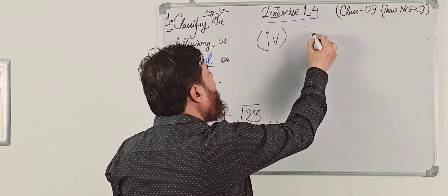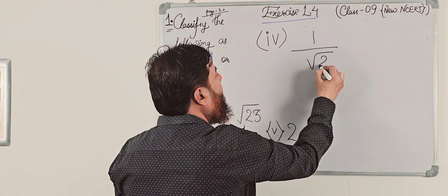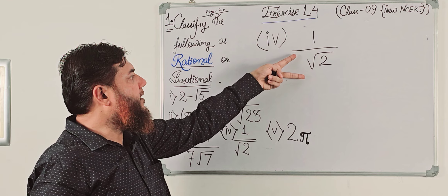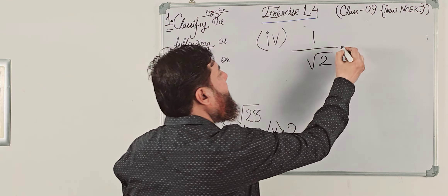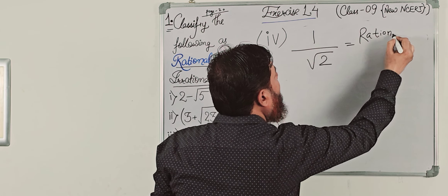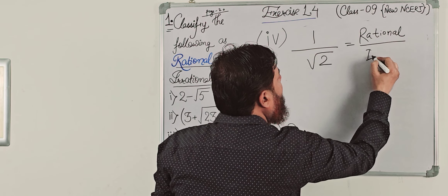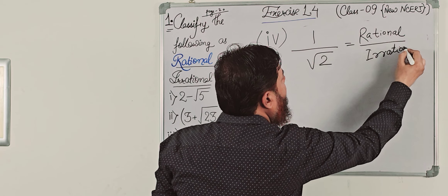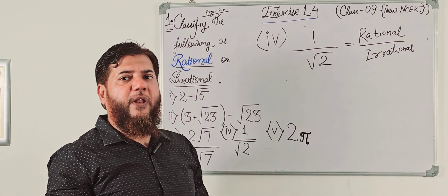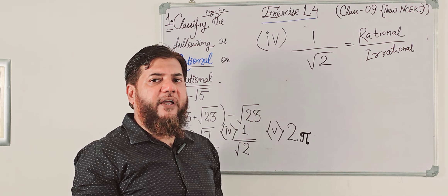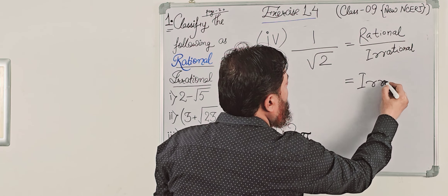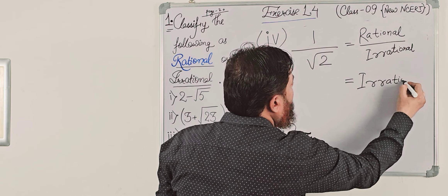Now question number 4: 1 upon root 2. Here 1 is rational and root 2 is irrational. Rational divided by irrational — by the properties of rational and irrational numbers, if you multiply, add, or divide a rational with an irrational, the result will be irrational. So 1 upon root 2 is irrational.